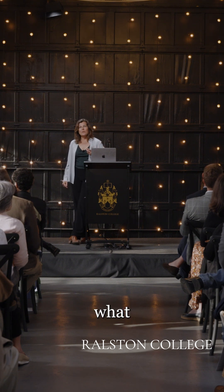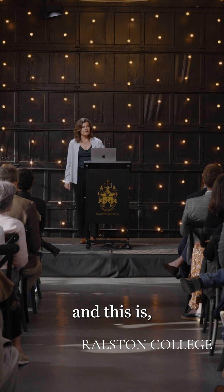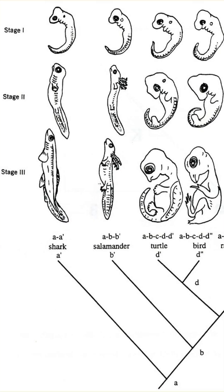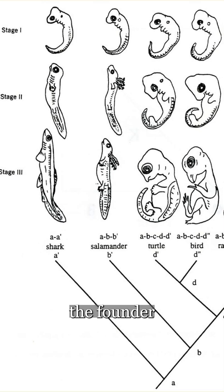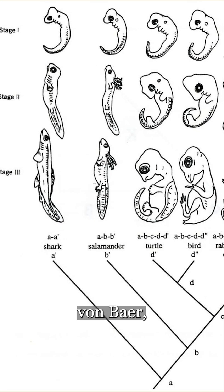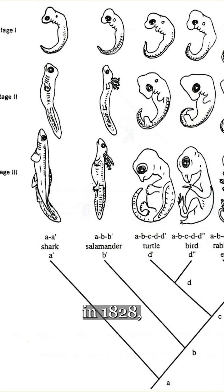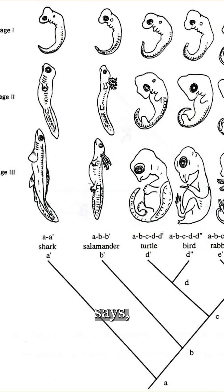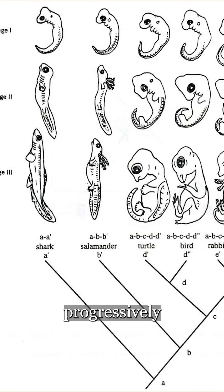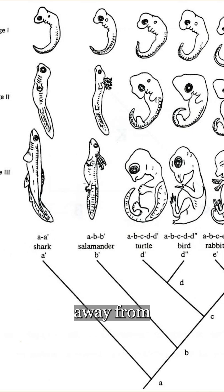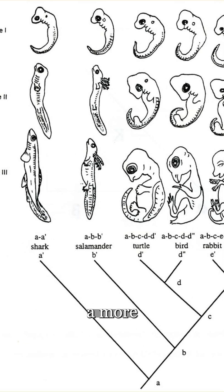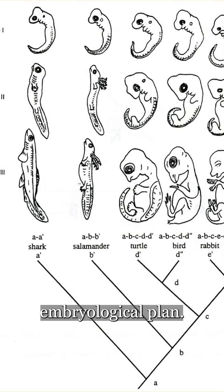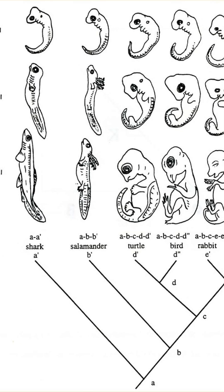But instead, what we have is — and this is maybe the founder of embryology — von Baer, in 1828, says embryos progressively differentiate away from a more common embryological plan.